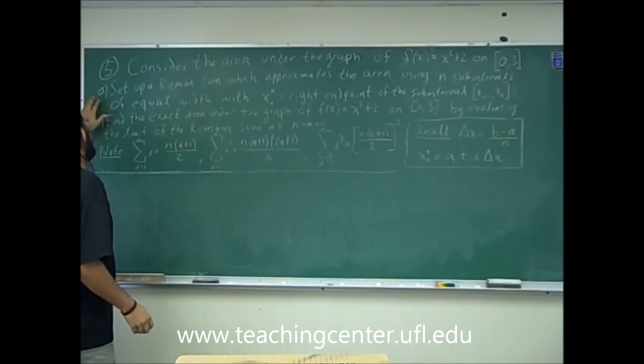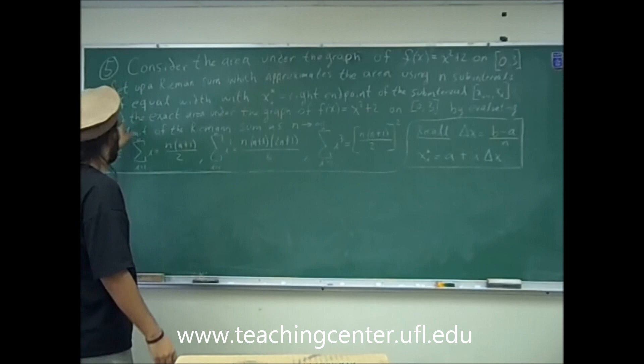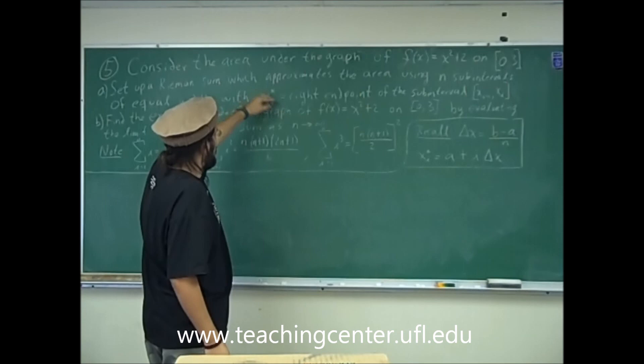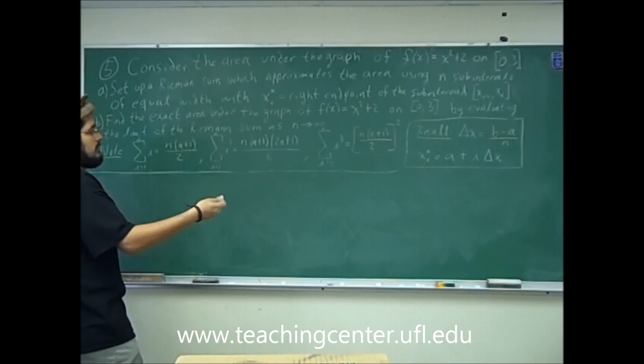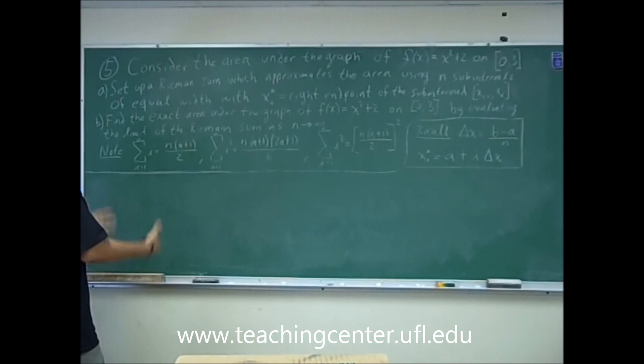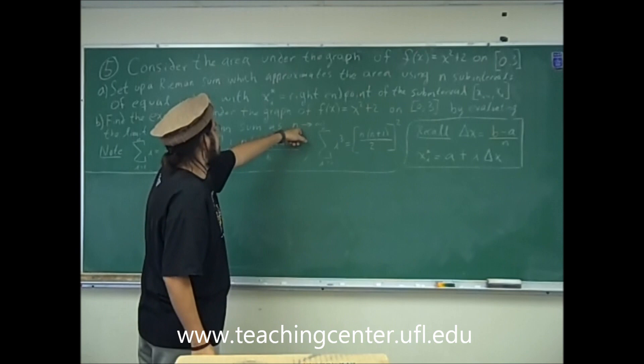Part a says to set up a Riemann sum which approximates the area using n subintervals of equal width, where x sub i star is equal to the right endpoints of the subinterval x sub i minus 1 to x sub i. Then part b, with that Riemann sum, we're going to evaluate the limit as n goes to infinity.